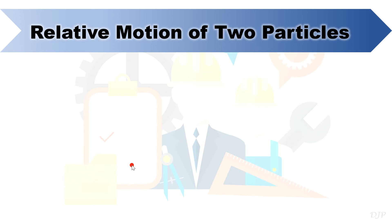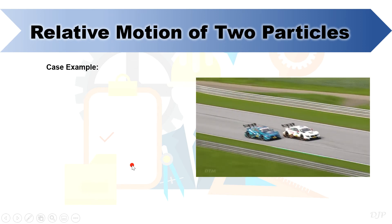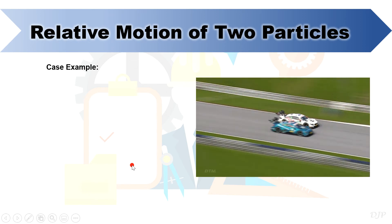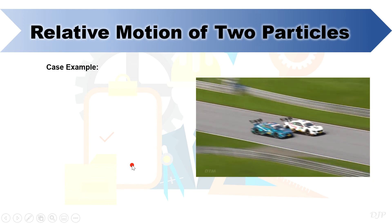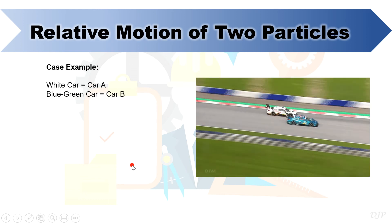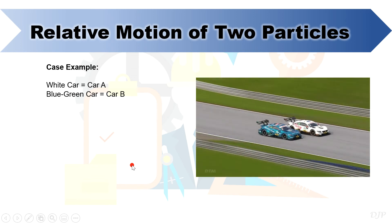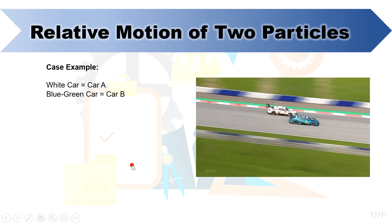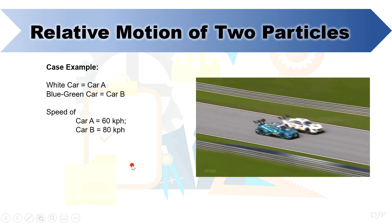To get a better grasp about relative motion, let's discuss this simple case example. As you can see in the figure, we have two racing cars moving with different speed along a straight track. Let's denote the white car as car A and the blue-green car as car B. Let's assume that car A and B is moving with a speed of 60 and 80 kph, respectively.